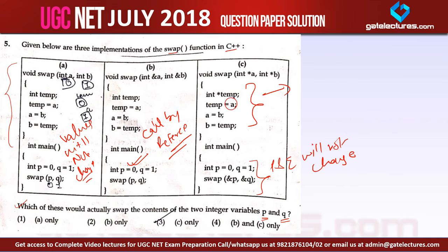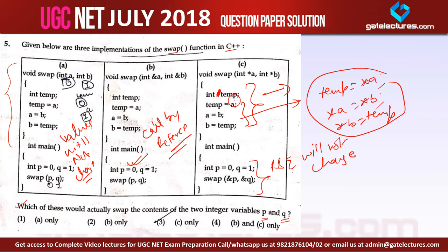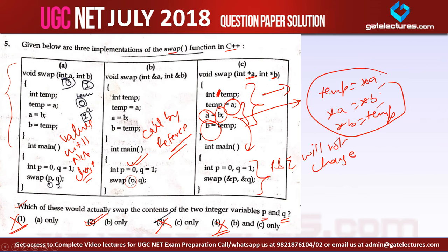The reason C fails is that instead of this, if you had written temp equals star A, star A equals star B, star B equals temp — dereferencing the pointers — then the actual content would change. But here we are only changing the pointer contents, not the real memory locations. So option 1 is wrong, option 2 is correct, option 3 is wrong, and option 4 is also wrong. The correct answer is option 2. You just need to understand call by value versus call by reference. This is similar to previous GATE questions — it was a one-mark question in GATE. Now let us look at question number 6.